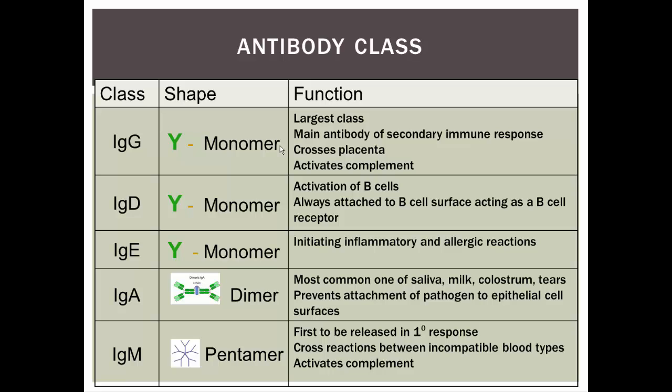The second class is IgD. These also have a monomer shape; the constant region is just a little different from IgG. These are the antibodies attached to the B cells that we saw in the previous slide — they are permanently attached there and act as receptors for B cells, helping with the activation of those B cells.